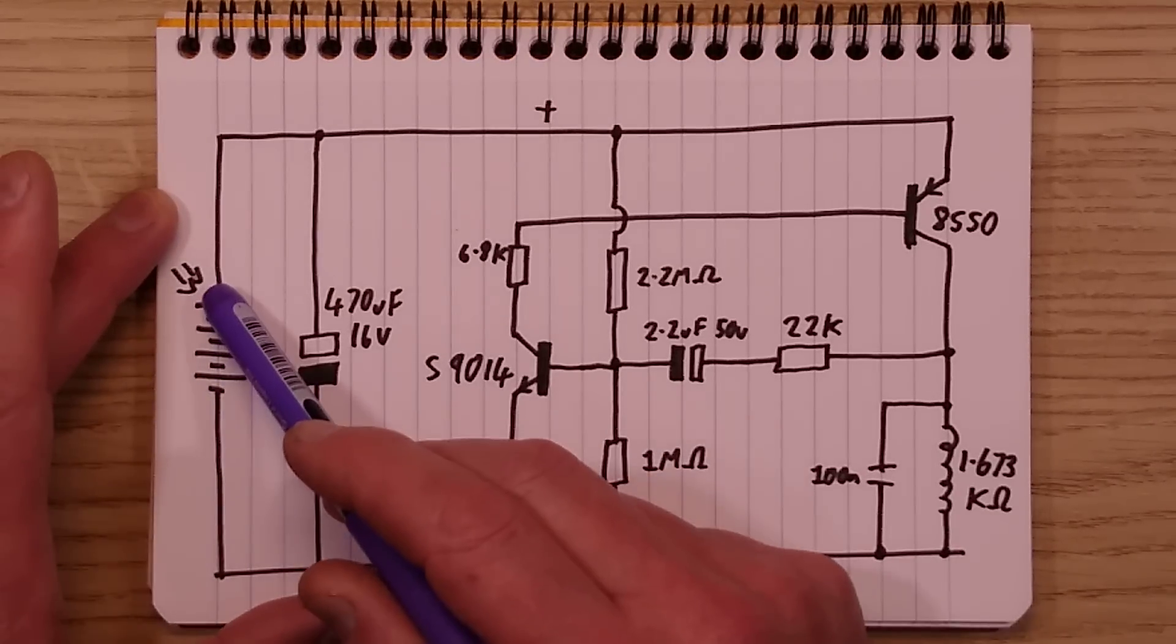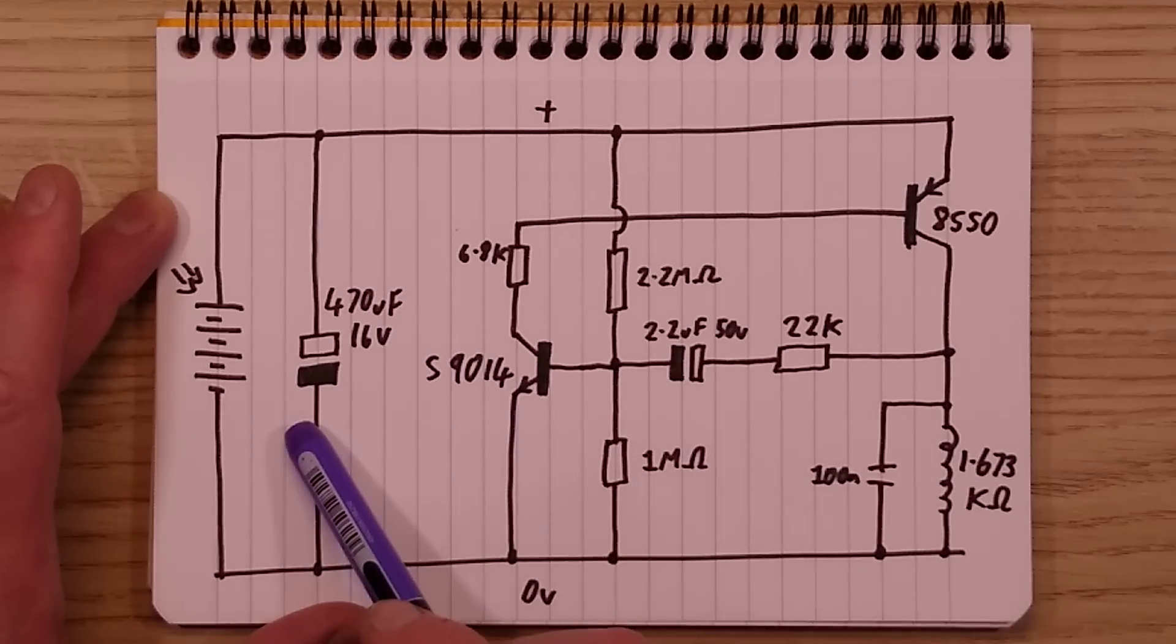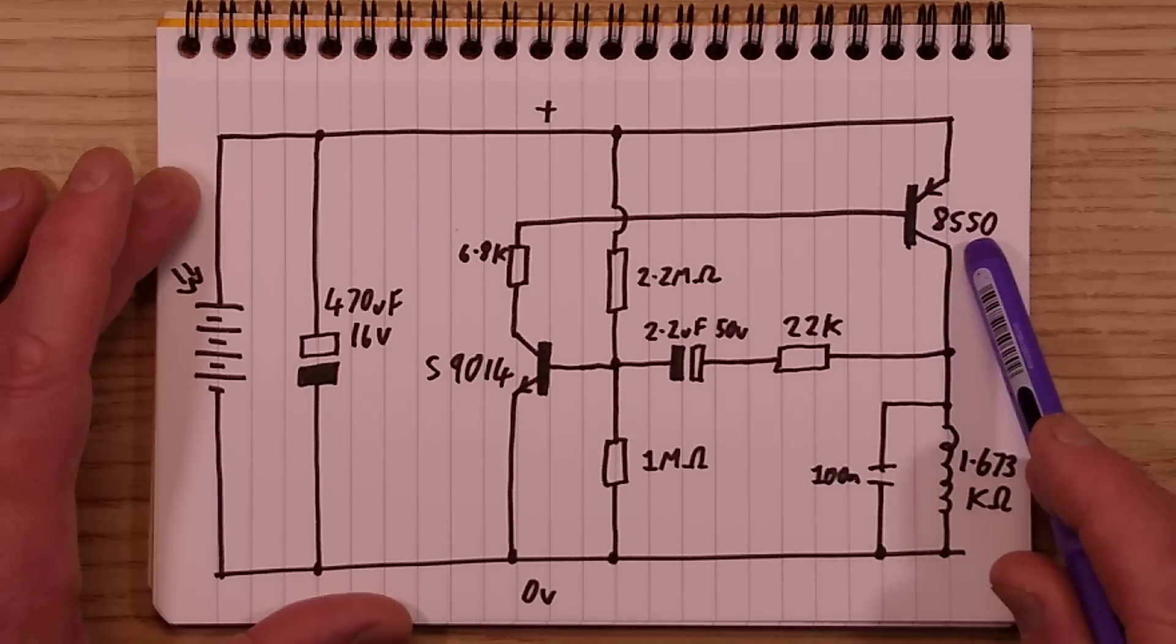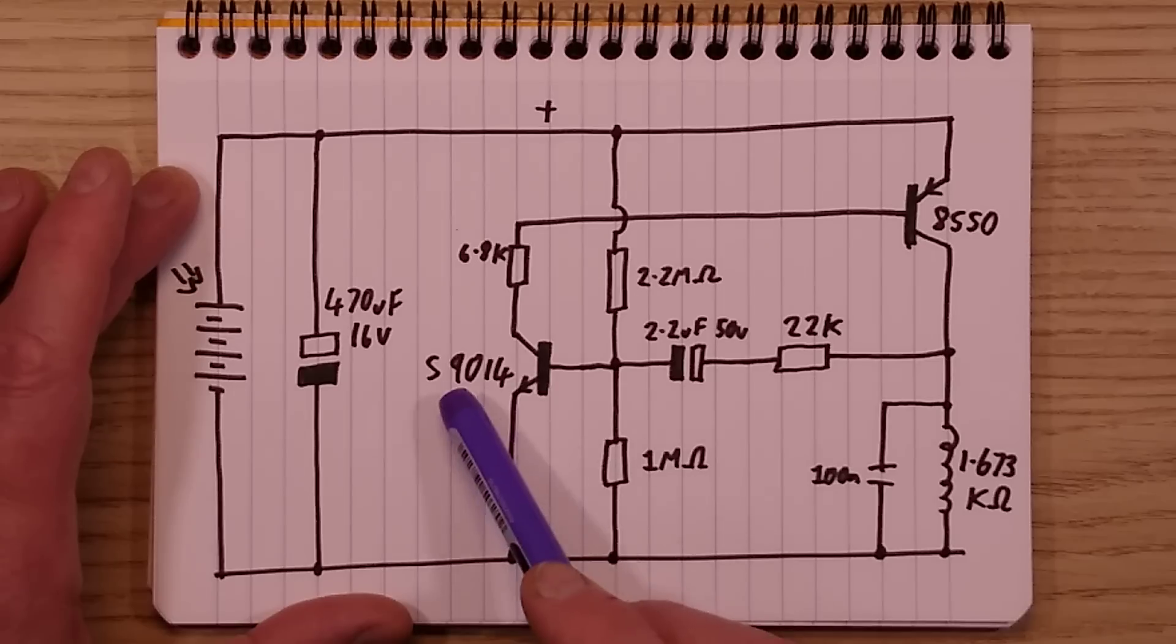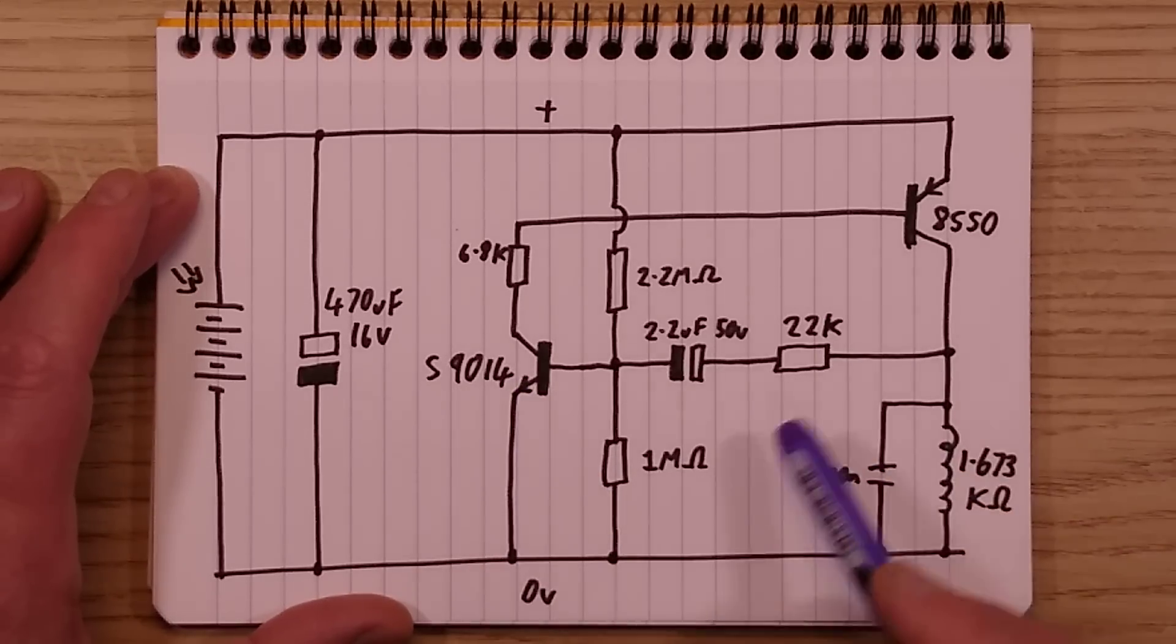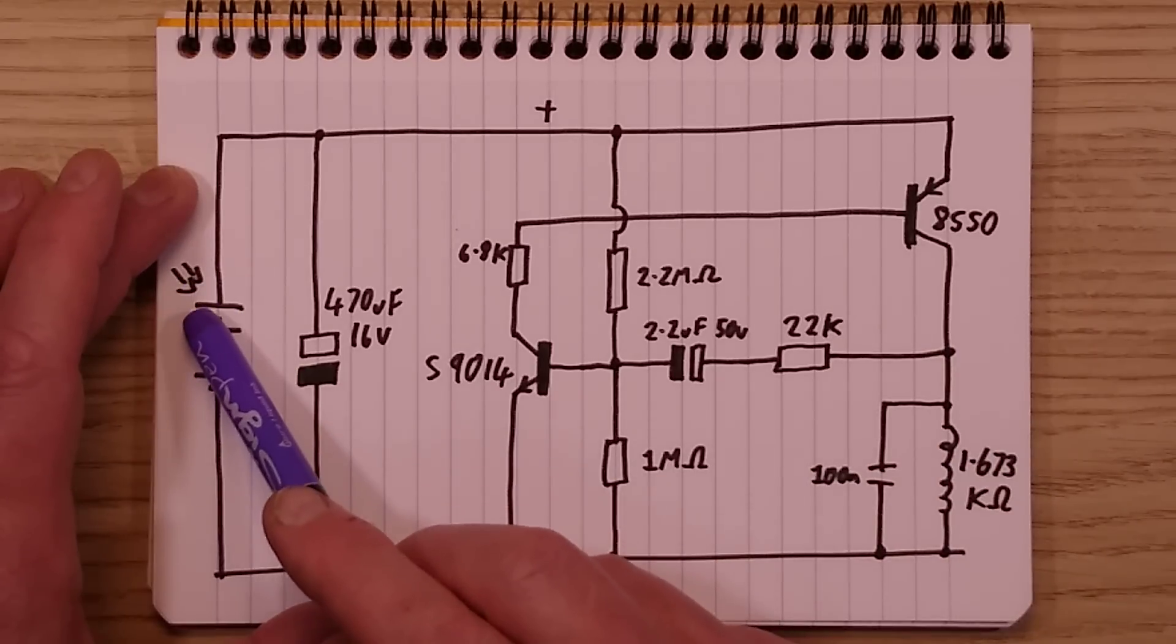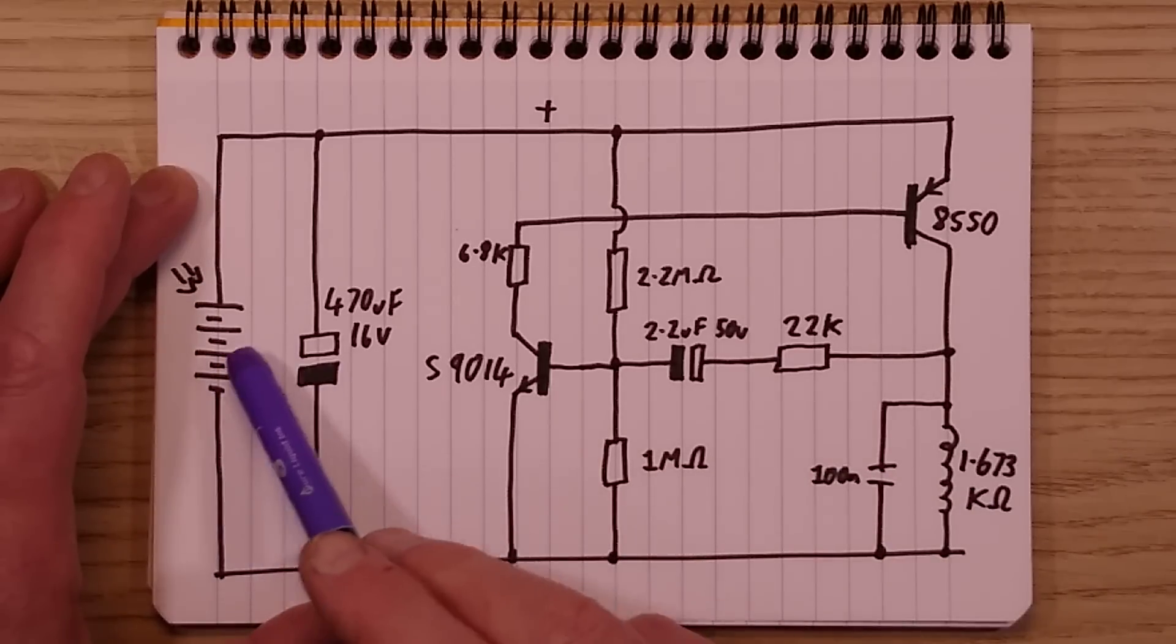Here's a solar panel, it looks like a standard calculator solar panel they've used and it's charging this 470 microfarad capacitor. The current to the coil is being switched through this PNP transistor, an 8550, and that transistor is being switched by this NPN transistor, an S9014. It's because of the arrangement of the two transistors that it can actually self-start.